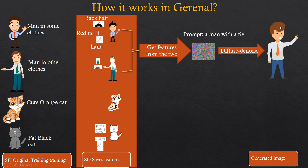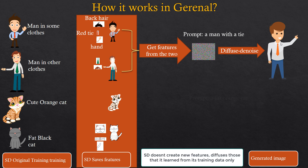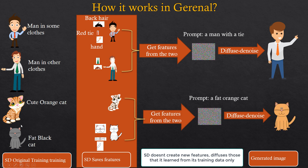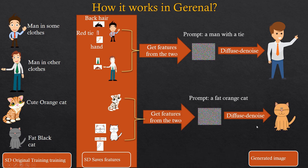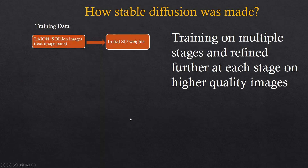Stable Diffusion will never generate things that it has not seen in the training data. When we get a cat, for example, it might take some features from this cat and from that cat and produce a new type of cat. So the training actually allows it to understand the concepts over large datasets and be able to combine features from different images to produce new images based on the existing features in its data.